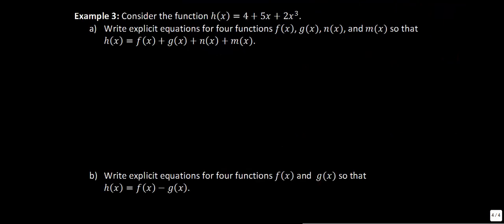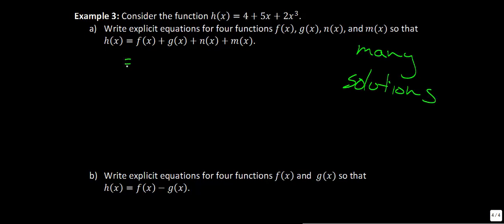Example 3: Consider h(x) = 4 + 5x + 2x³. Write explicit equations for f(x), g(x), n(x), and m(x) so that h(x) equals their sum. Note: there are infinitely many solutions. One possibility: f(x) = 3, g(x) = 1, n(x) = 5x, m(x) = 2x³. Adding these together gives 4 + 5x + 2x³.